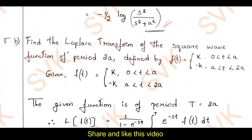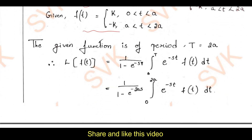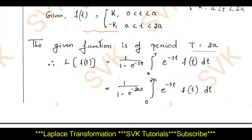Going to the next problem on periodic functions with period 2a — a discontinuous (square-wave type) function. According to the periodic function formula, the Laplace of a periodic function f(t) is: [1/(1 − e^(−sT))] · integral from 0 to T of e^(−st)·f(t) dt, where T = 2a.